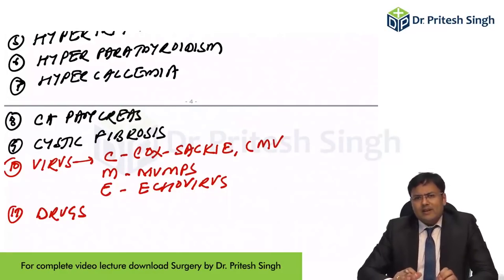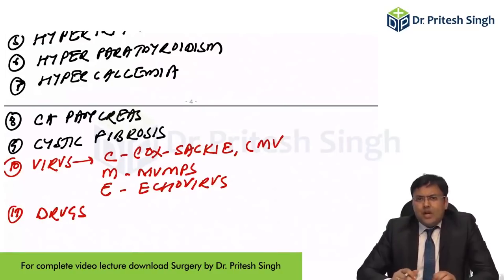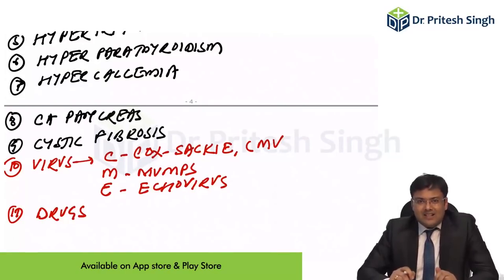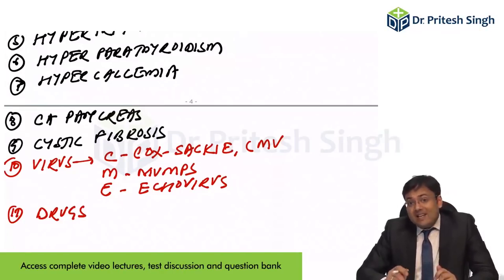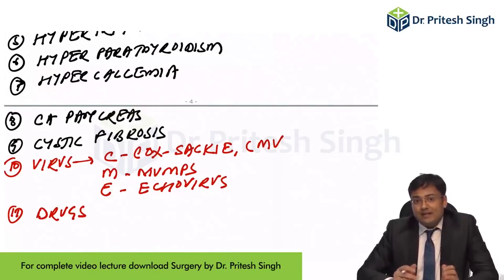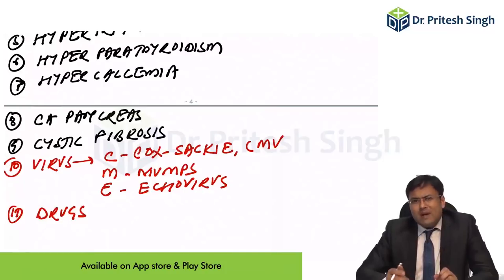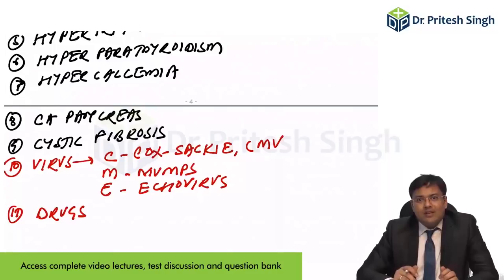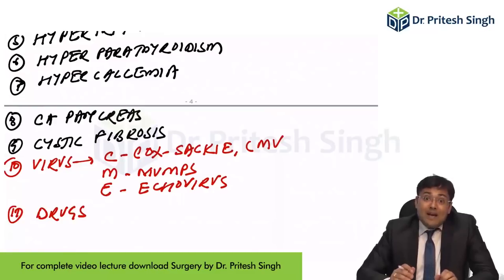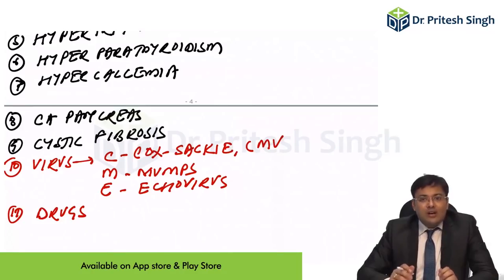One key principle in acute pancreatitis: anything which can lead to obstruction of the pancreatic duct can cause acute pancreatitis. That's why gallstones cause it; in alcohol, there is pancreatic duct obstruction because of secretions; in cystic fibrosis and carcinoma pancreas, there is ductal obstruction. In hypercalcemia from hyperparathyroidism, stones form and those stones cause acute pancreatitis.